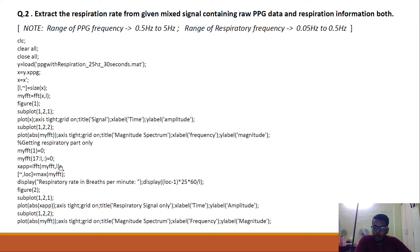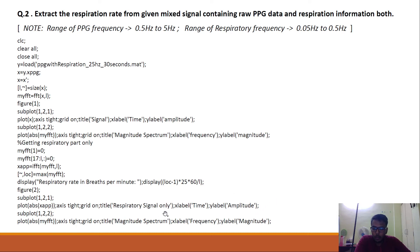Then we take the IFFT of the signal, find the maximum location, and calculate the respiratory rate. We then plot the results — doing the same calculation and local part as done in the last section. We calculate the breaths per minute using this and then plot the respiration-only signal and the magnitude spectrum of the respiration-only signal.